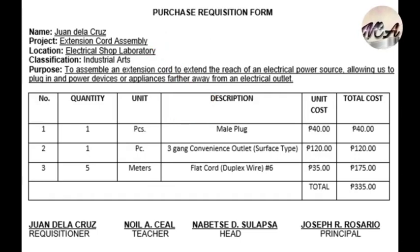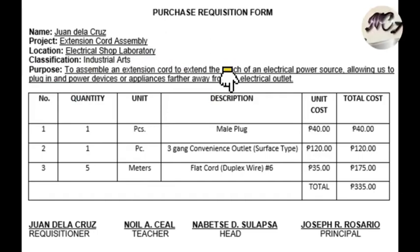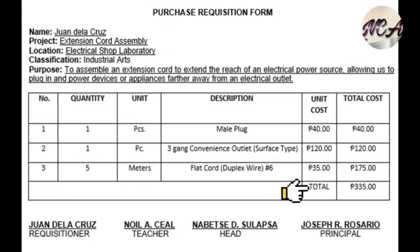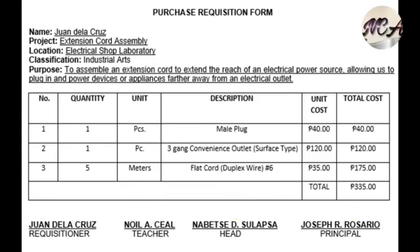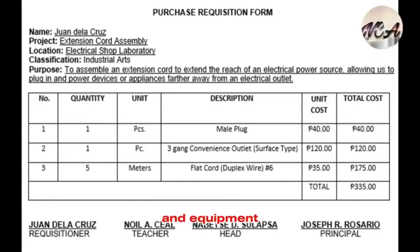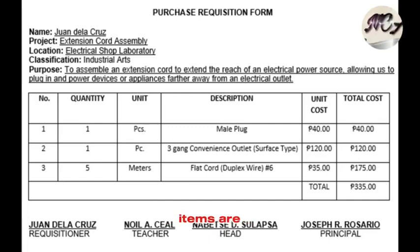You just have to fill out the needed information based on the number of your requested items, their quantity, unit descriptions, unit cost, total cost of each item, and the grand total costs of your requested items. On the bottom portion of the form are all the signatories involved. These forms are used to request and track materials and equipment needed for electrical projects, ensuring that the right items are ordered and used.